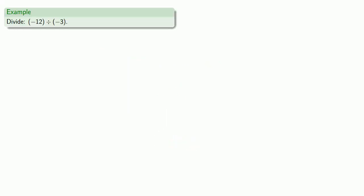Let's consider the division of signed numbers. So let's divide minus 12 by minus 3. First of all, remember that a divided by b can be read as the fraction a over b.